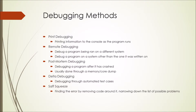Just as there are many different kinds of debuggers, there are many different ways to debug your code. One such way is called print debugging, which involves printing the information stored in your code to the screen, generally through console output. Another method is called remote debugging, which is when a program is debugged on a different system than the one it was written on, or just on a different operating system altogether. Post-mortem debugging is when a program is debugged after it has already crashed, and this is usually done through a memory or core dump, generally after a segmentation fault or an unexpected exception has occurred.